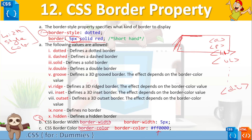The shorthand operator means we just write border, then specify the border width, the border style, and then the color — all in one line, rather than writing those three properties separately.